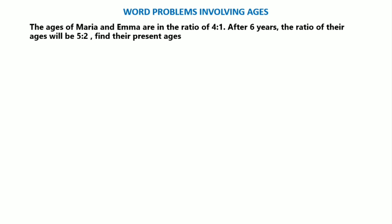Welcome, my viewer. In this tutorial, I will share with you how you can solve word problems involving ages. I have a question here: The ages of Maria and Emma are in the ratio of 4 to 1. After 6 years, the ratio of their ages will be 5 to 2. Find their present ages.